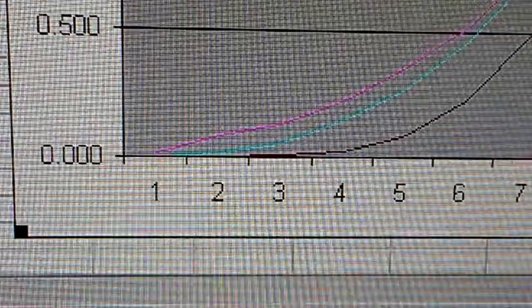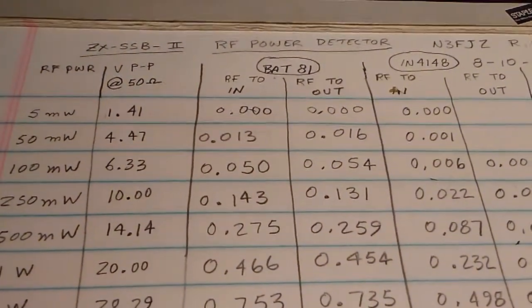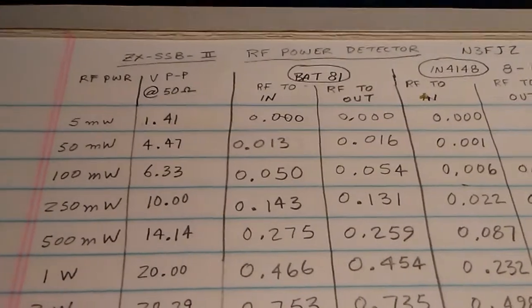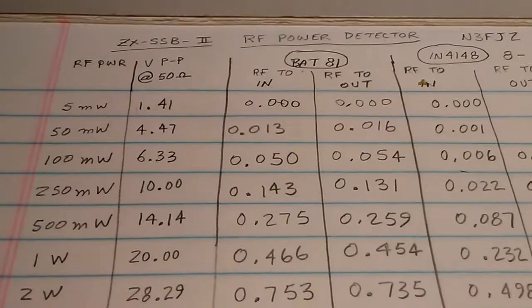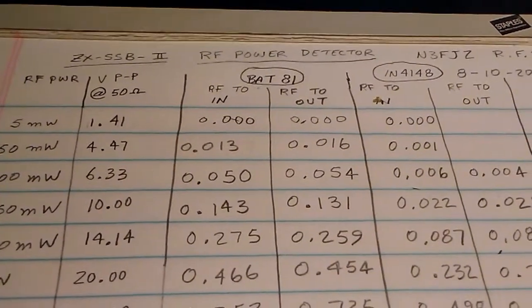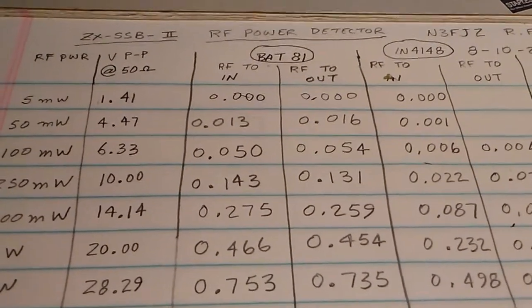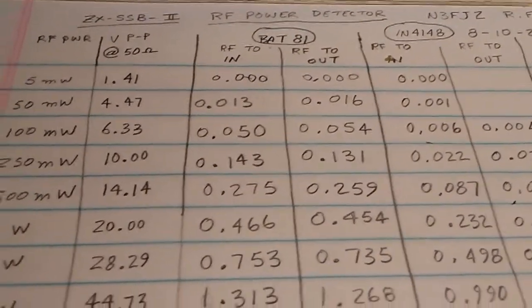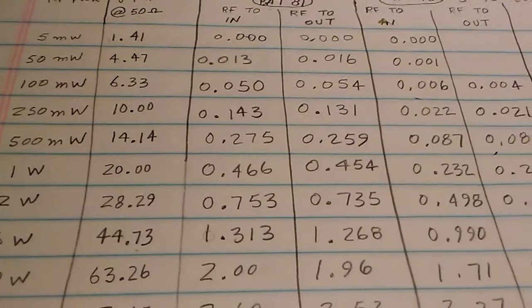So below one watt, you start to get output where the other diodes, you had to get significantly above, let's see what was it, 5 milliwatts, even though it's not written here, but the 1N34A did produce output down to 5 milliwatts. Where the BAT-81 and the 1N4148, they were at 0 volts, and as you climbed up, you would get some output. And you really didn't start to produce decent output until you got to about 1 watt.